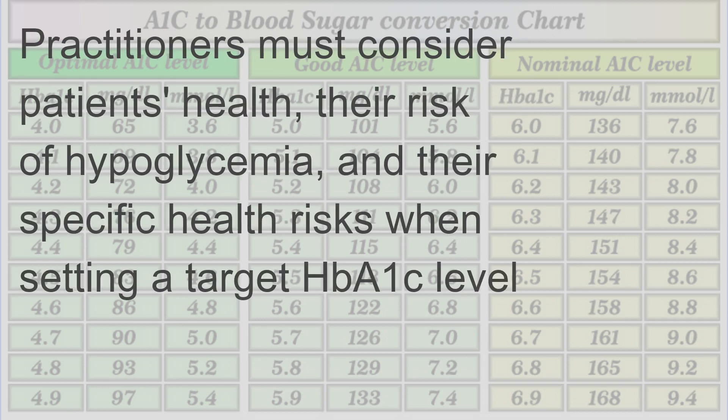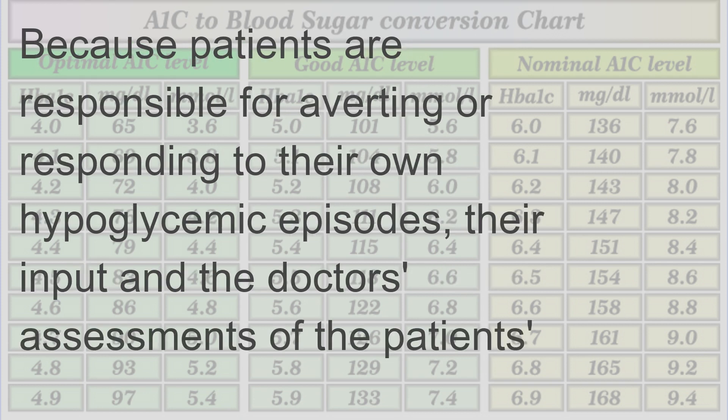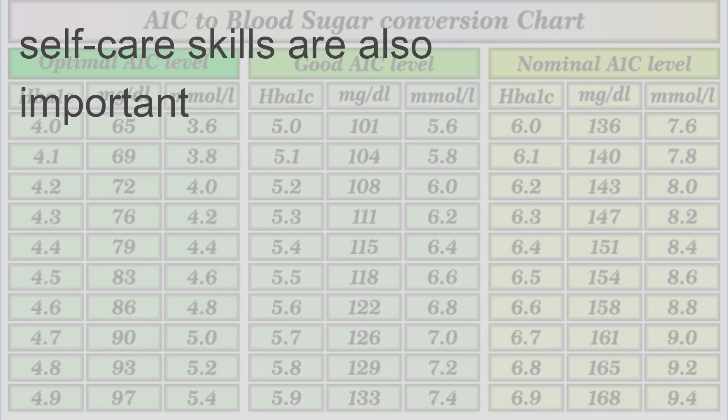Practitioners must consider patients' health, their risk of hypoglycemia, and their specific health risks when setting a target HbA1c level. Because patients are responsible for averting or responding to their own hypoglycemic episodes, their input and the doctor's assessments of the patient's self-care skills are also important.